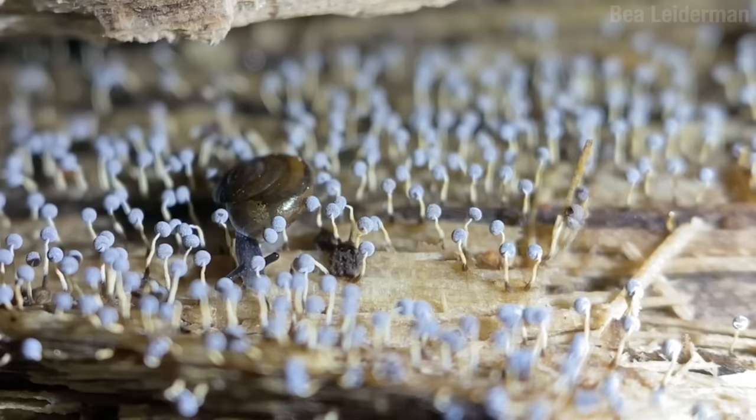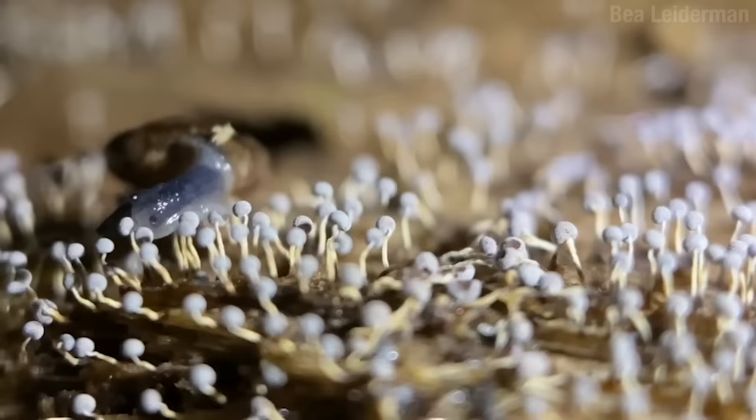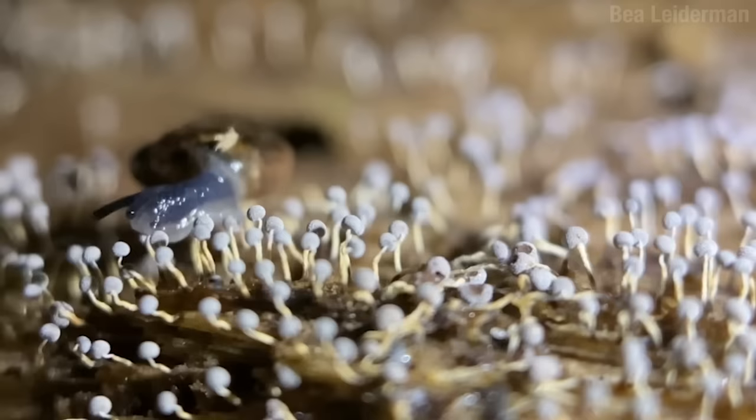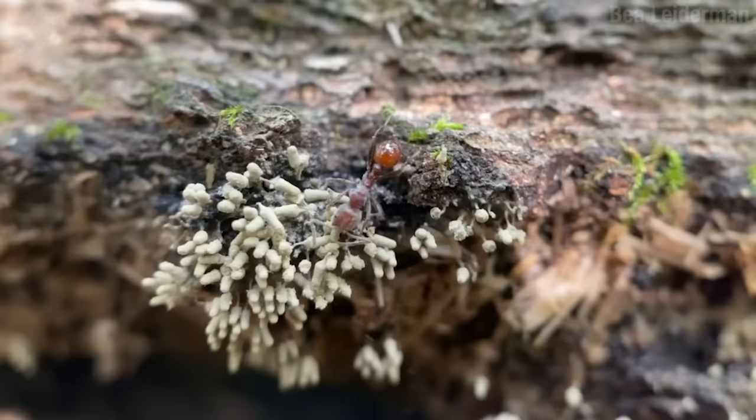This right here is sort of like a slime mold kindergarten. Slime molds aren't molds, but at this stage of their life, they resemble them. Because they start off as spores. And right here, there are thousands of spores. Yes, the snail is eating them. Kind of a bummer. But the babies who aren't getting murdered will be dispersed out into the world by the wind or passing insects. Whoa! That ant was spring-loaded.